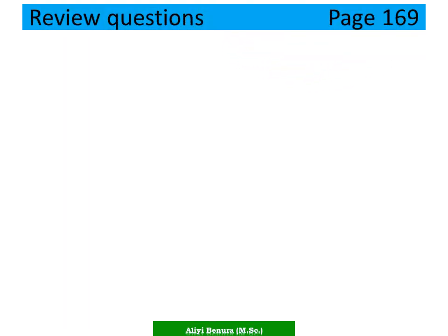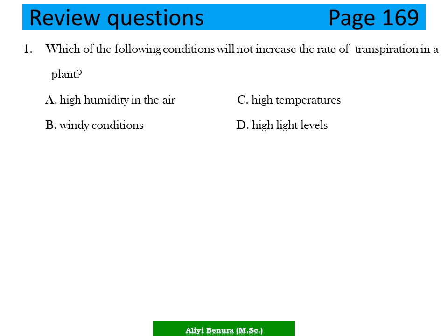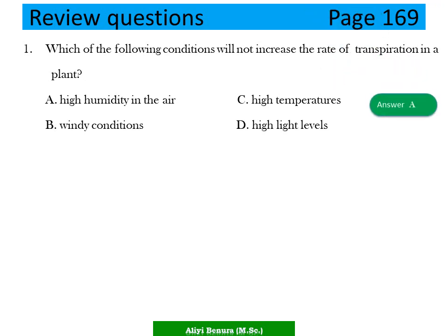Review question, page 169. Question 1: Which of the following conditions will NOT increase the rate of transpiration in a plant? A) High humidity in the air, B) Windy conditions, C) High temperature, D) High light levels. The answer is A — high humidity in the air.